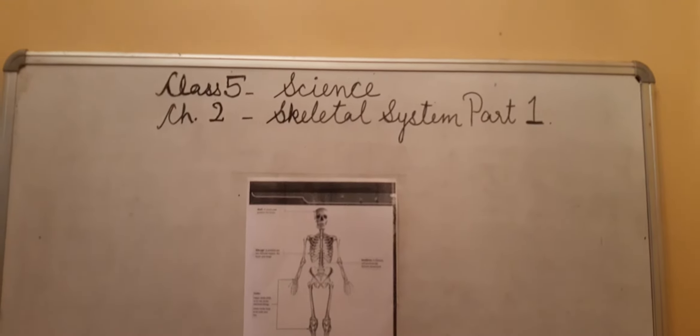Now I would like to tell you about the skull. In this picture, children, you can see the different bones that are in our body. The skull is a hollow round structure which is present in the head, and it is made up of 22 bones.